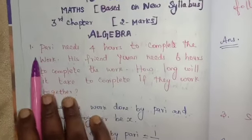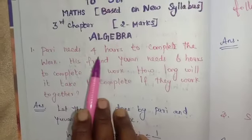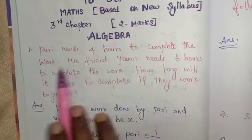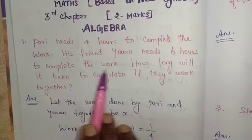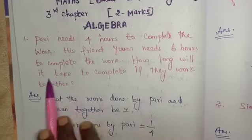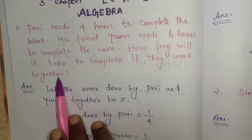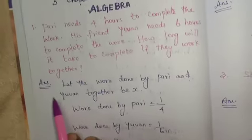First important 2 mark question: Pari needs 4 hours to complete the work, his friend Yuen needs 6 hours to complete the work. How long will it take to complete if they work together?